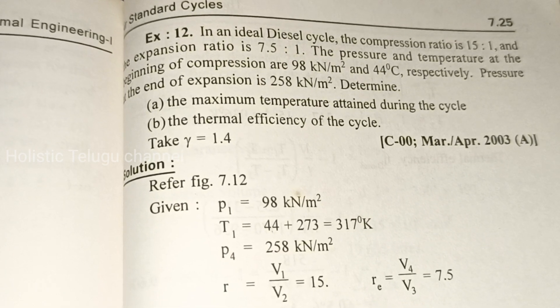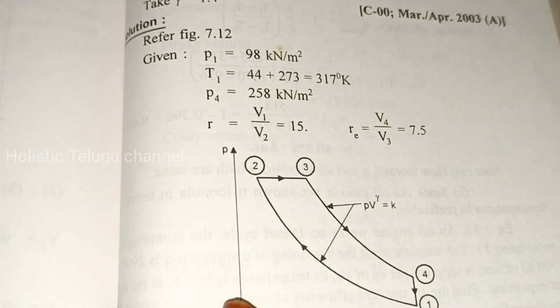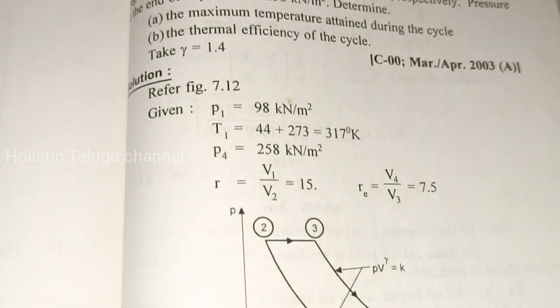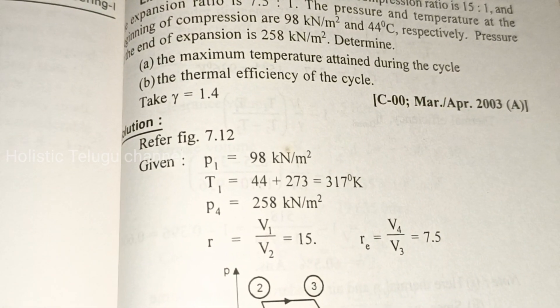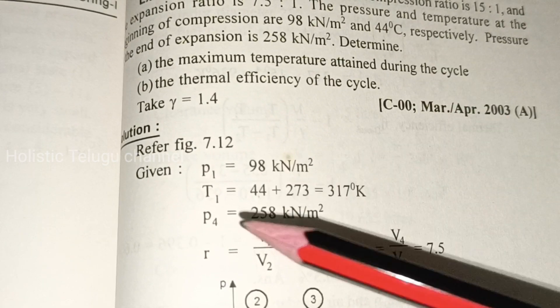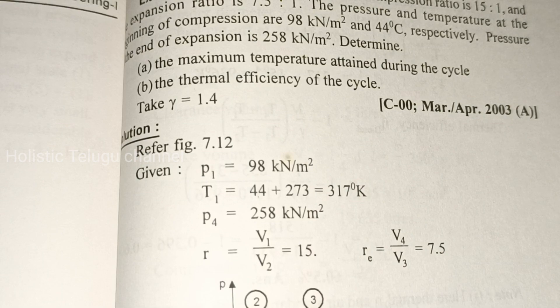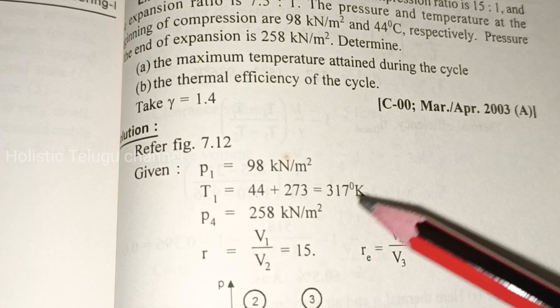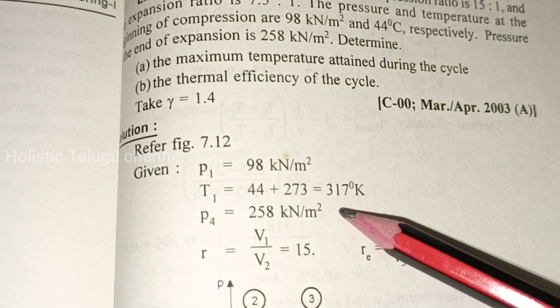Take gamma equal to 1.4. Given: initial pressure p1 = 98 kN/m², initial temperature T1 = 44°C = 44 + 273 = 317 K, and p4 = 258 kN/m² at the end of expansion.